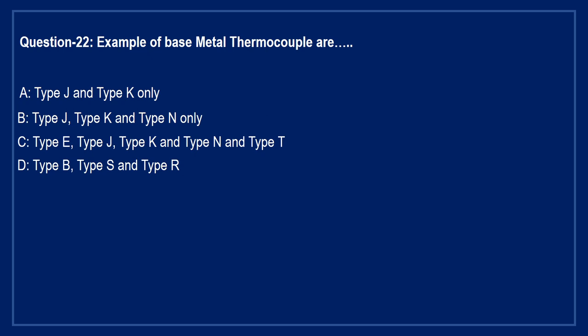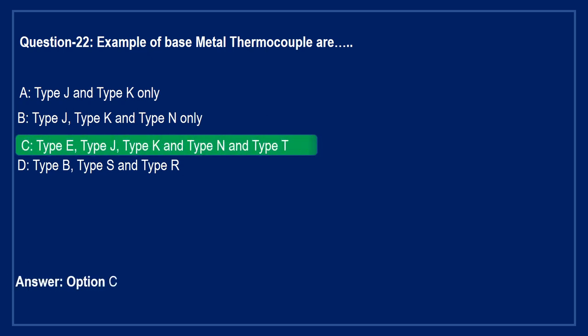The examples of base metal thermocouples are: Option A: type J and type K only. Option B: type J, type K, and type N only. Option C: type E, type J, type K, type N, and type T. Option D: type B, type S, and type R. The right answer is Option C — type E, J, K, N, and T thermocouples are base metal thermocouples.